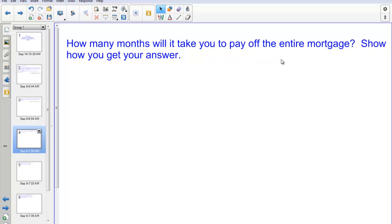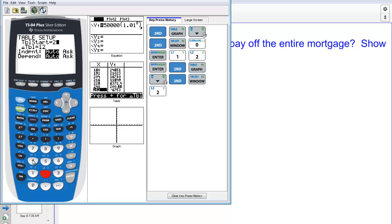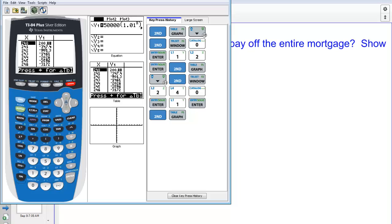Now the next thing we're asked is how many months will it take to pay off the entire mortgage? Show how you get your answer. All right, well, let's continue to use the table here, and we can scroll down until we see when our loan balance goes from positive, here at $200.88, to negative. So we know that sometime between the 240th month and the 252nd month, we've paid off our mortgage. To find a more specific value, I'm going to go back into the table set. And I'm not going to start at 180, I'm going to start at 240, because that's when we were still positive. And instead of going every 12 months now, I'm going to go every month to figure out just when we drop. Now if I go back to the table, I can see that between 240 and 241, we've changed from positive to negative. So, that 241st month, we will have paid off the entire $50,000 loan plus the interest.